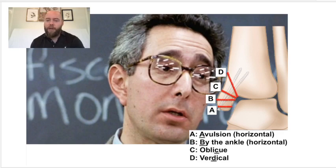A for avulsion - it's a horizontal at the tip of the medial malleolus. B for by the ankle, which is also horizontal but at the level of the ankle joint.